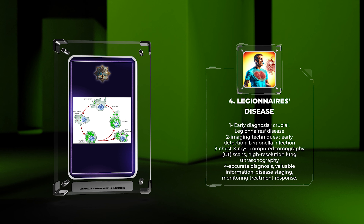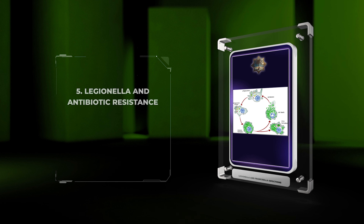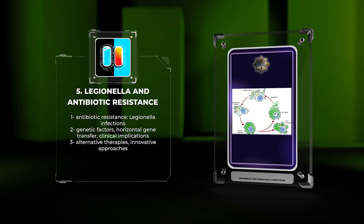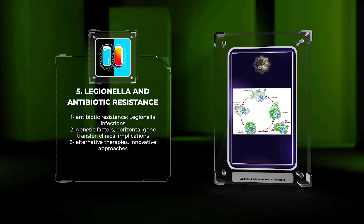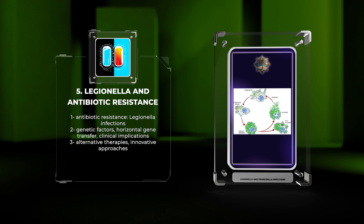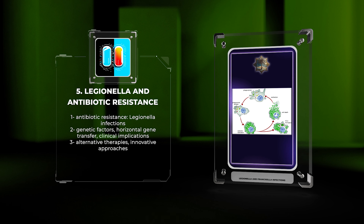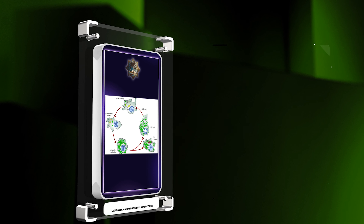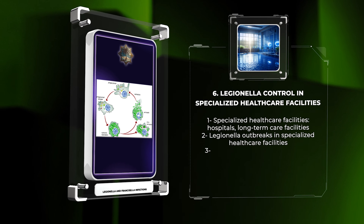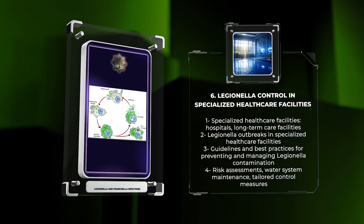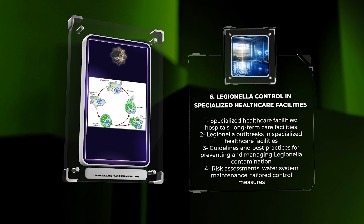Early diagnosis of Legionnaire's disease is crucial for timely intervention and improved patient outcomes. We will discuss the latest advances in imaging techniques that aid in the early detection of Legionella infection, exploring the utility of chest X-rays, computed tomography (CT) scans, and novel imaging modalities such as high-resolution lung ultrasonography. These advancements not only facilitate accurate diagnosis but also provide valuable information for disease staging and monitoring treatment response.